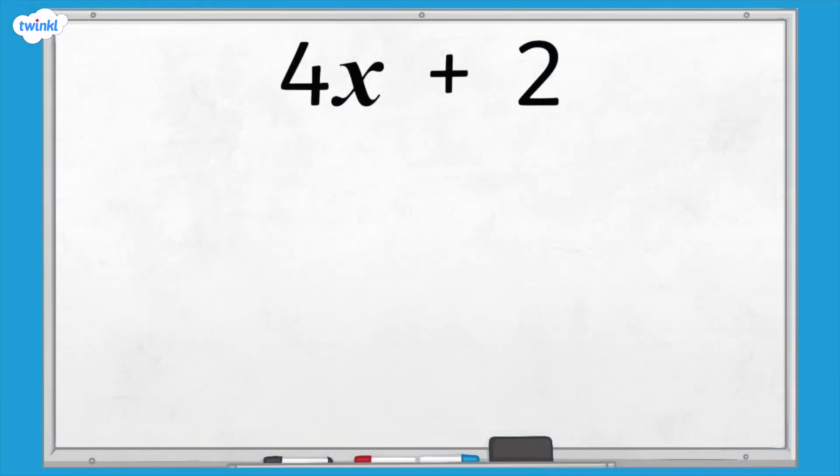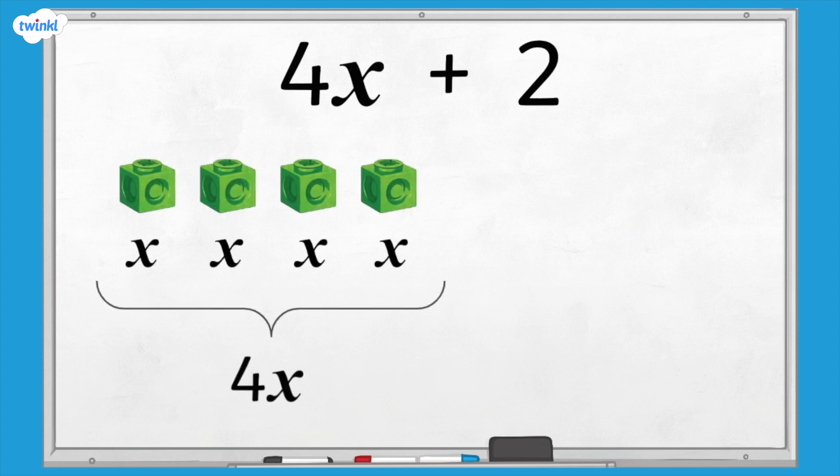Next let's look at expressions where we are adding ones. To represent the expression 4x plus 2 we would use four interlocking cubes, one for each lot of x, and two ones cubes.